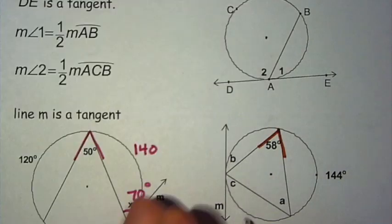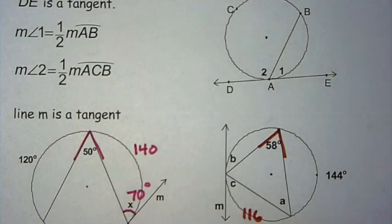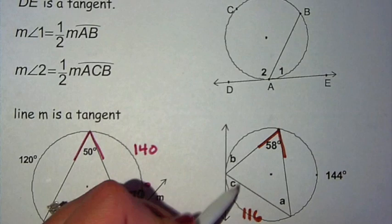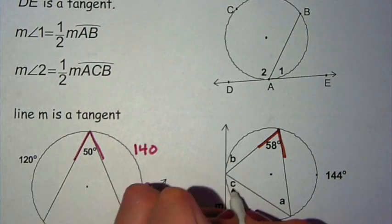Next example, you have a 58 degree angle. So the intercepted arc is 116, double that angle. All the arcs in a circle need to add up to 360.